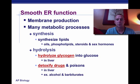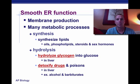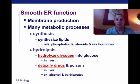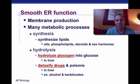Smooth ER is also found in the liver. It can help hydrolyze glycogen, which helps break it down. And it can be used to detoxify drugs and other poisons. So you would have a high concentration of smooth ER in your liver. Because you do have high amounts of ER in your liver, the more often it breaks down a certain drug actually proliferates or increases the amount of smooth ER you have.